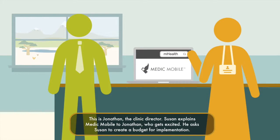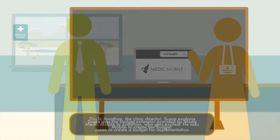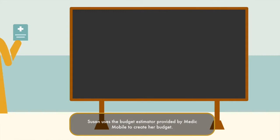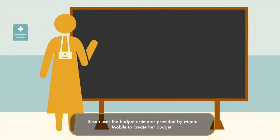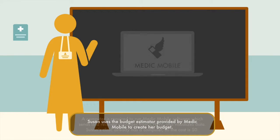This is Jonathan, the clinic director. Susan explains MedicMobile to Jonathan, who gets excited. He asks Susan to create a budget for implementation. Susan uses the budget estimator provided by MedicMobile to create her budget.